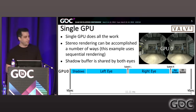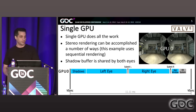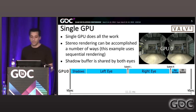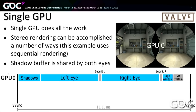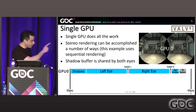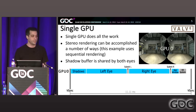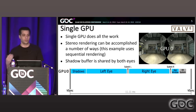Before multi-GPU, let's talk single GPU. You've got one GPU, it does all the work. Stereo rendering can be done sequentially — left eye followed by right eye. In a standard setup, you render your shadow buffer up front, then the left and right eyes share those results since shadows are view-independent. You render shadows, then left eye, submit left eye to the VR system, then render right eye and submit that. The blue jobs on the timeline are done by your application; the gray jobs are done by the VR system, sometimes called the compositor.